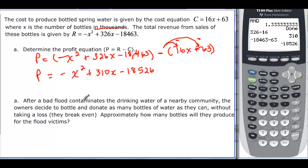So it says after a bad flood contaminates the drinking water of a nearby community, the owner decides to bottle and donate as many bottles of water as they can without taking a loss. This means they break even. Approximately how many bottles will they produce for the flood victims?